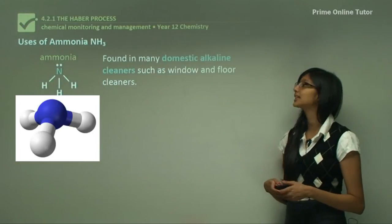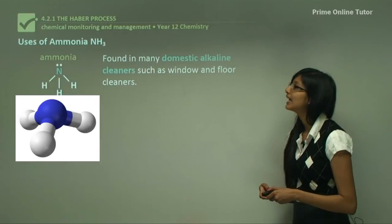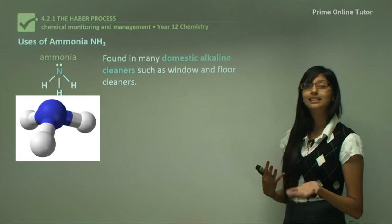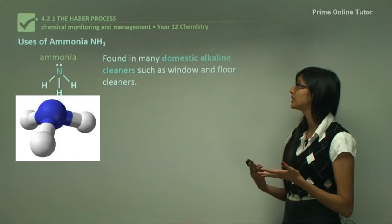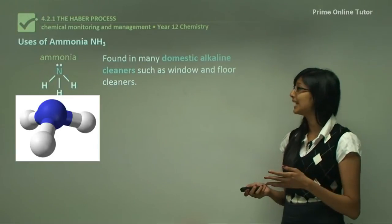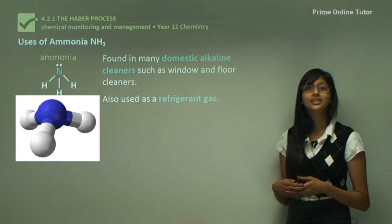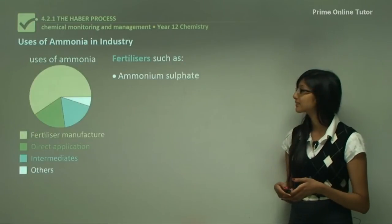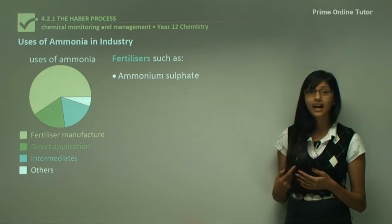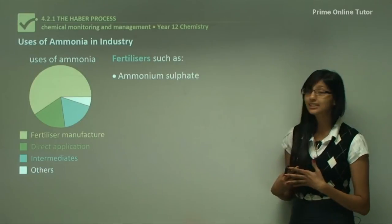Now let's look at some of the uses of ammonia. Ammonia is found in domestic alkaline cleaners such as window and floor cleaners. We will shortly look at why that is. It is also used as a refrigerant gas.